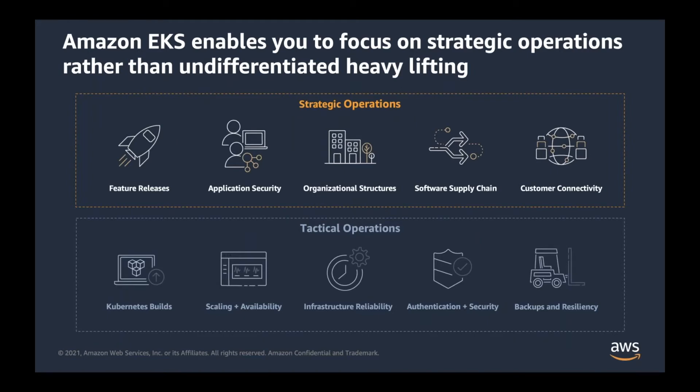Our customers choose Amazon EKS because it really allows them to focus on their business applications and offload that undifferentiated heavy lifting — those tactical operations associated with self-managing infrastructure. It allows them to offload operations that really don't add direct business value. Amazon EKS makes it easy to run Kubernetes without having to validate, build, or operate Kubernetes on your own.